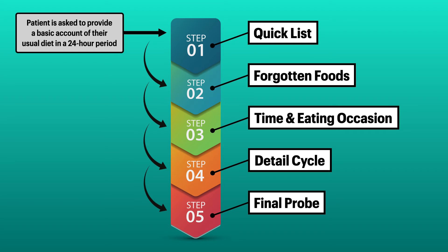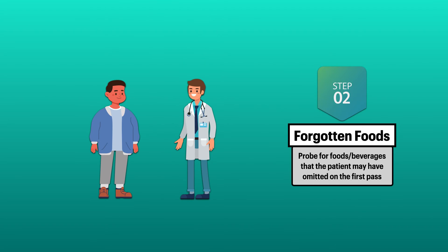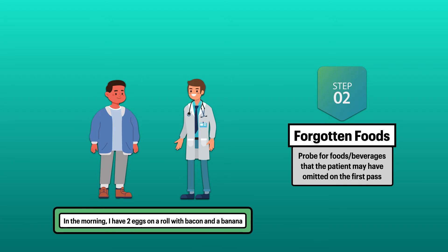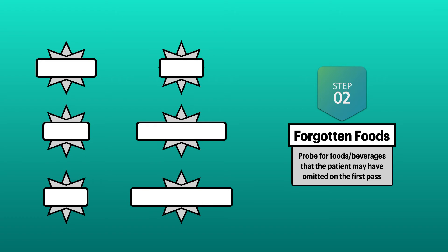Once you have the quick list prepared, it's time to move on to the forgotten foods. Here, the goal is to probe for foods and beverages that the patient may have omitted on the first pass. You go back to the beginning of their day and ask questions about the meals and snacks they've already described. For example, if in the quick list a patient said, 'In the morning, I have two eggs on a roll with bacon and a banana,' then you'll want to ask questions like, 'Is there any cheese on the egg sandwich?' and 'Do you have anything to drink with it?'